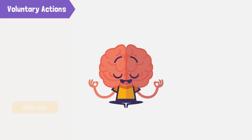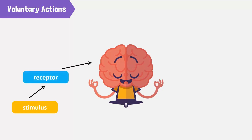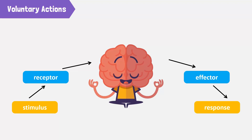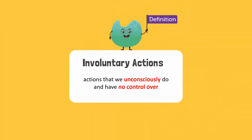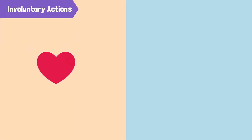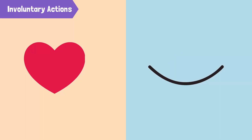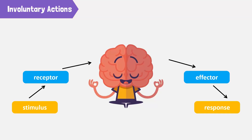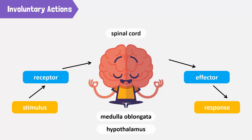In voluntary actions, the stimulus is carried directly to the brain or spinal cord through receptors. The brain processes the information and sends motor impulses to the specific effectors for the relevant controlled response. However, the actions that we unconsciously do and have no control over are involuntary actions — for example, the beating of our heart and the blinking of our eyes. We can't control these actions with our intentions. They are controlled by specific parts of the central nervous system, which includes the medulla oblongata, hypothalamus, and spinal cord.